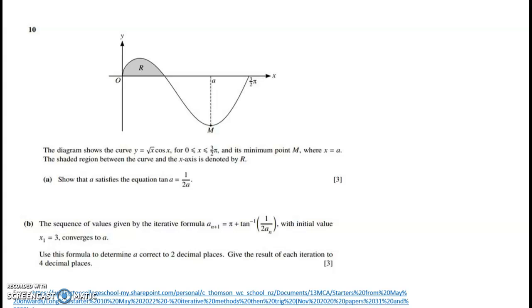So we're shown a curve here, and the curve is for the function y equals root x cos x, and it's just done for the region between x between zero and three pi over two. And its minimum point is where x is equal to a.